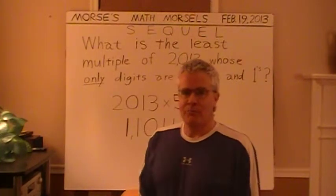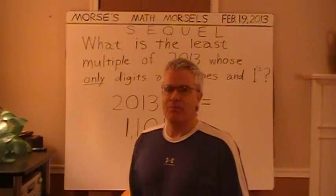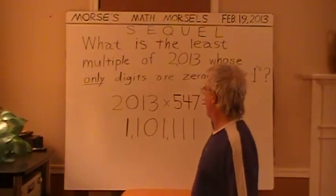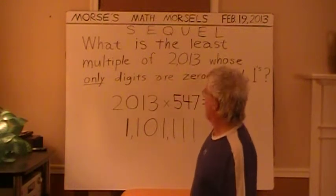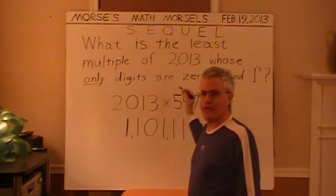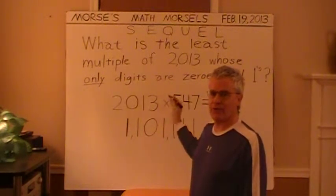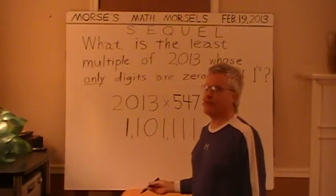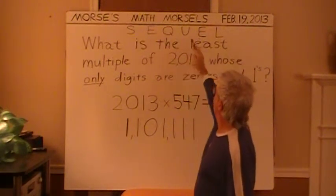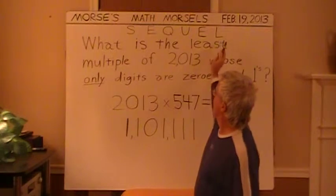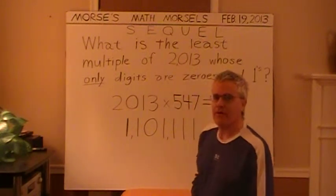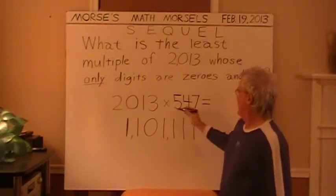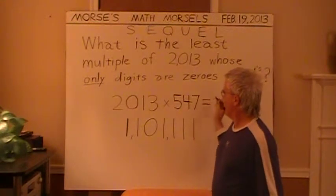Hello, and welcome to Mortis Math Morsels. Here's the sequel to that question about the multiple of 2013 and whether it could contain ones and zeros. You can tell this is a sequel because I printed the word sequel up top of the question. So here's the indicated problem.